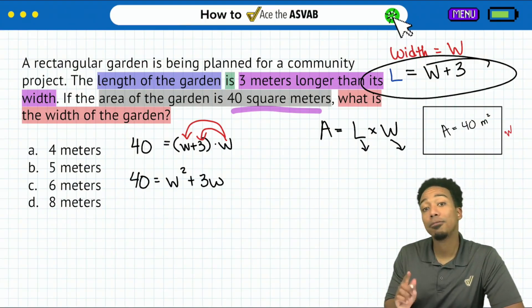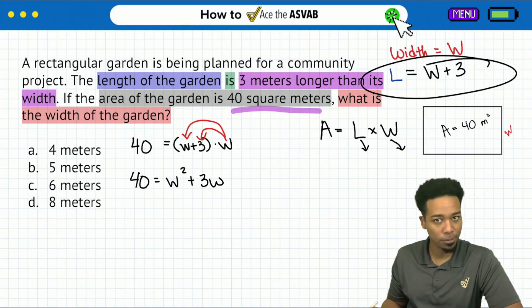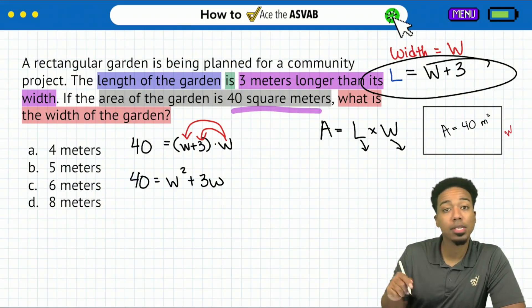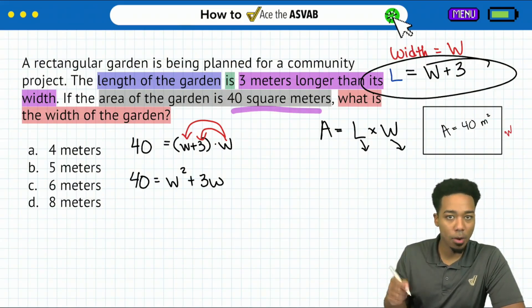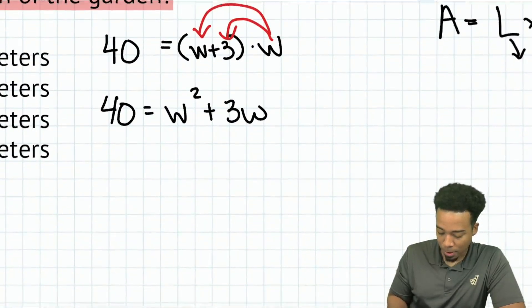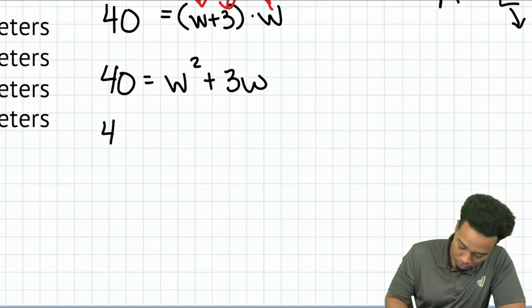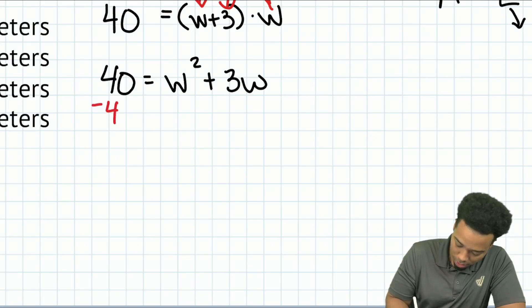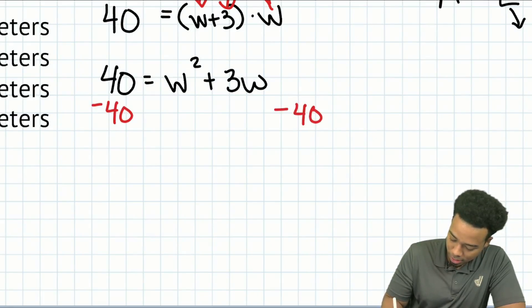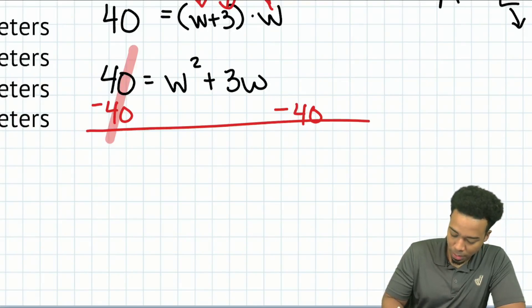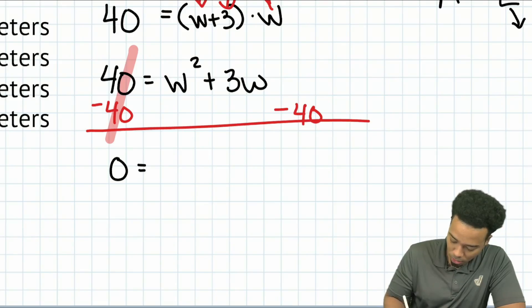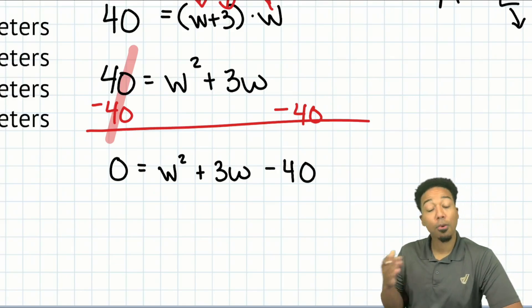So what we're going to do next is we're going to go ahead and solve this polynomial equation, this quadratic equation by first getting zero by itself. So here, if you are in my program, this is going to be in the arithmetic reasoning and math knowledge courses. Be sure to check that out. If you want the pure math part, that's going to be in the math knowledge. So here, 40, we are going to subtract that on both sides. Let me use a different color. Nice and easy. We don't have any like terms on the right side and that's fine. Cancels on the left and giving us zero equals W squared plus three W minus 40.